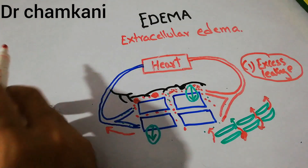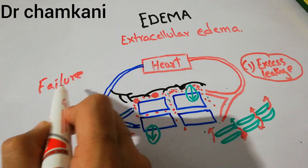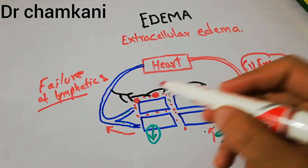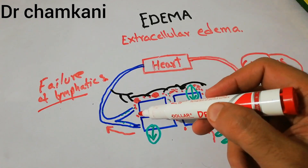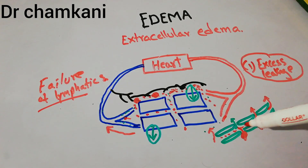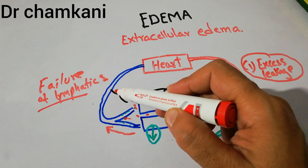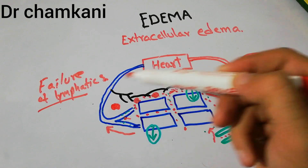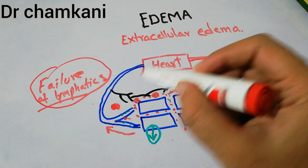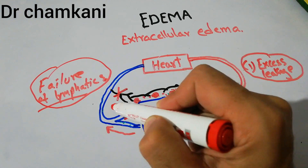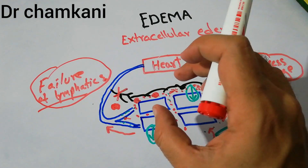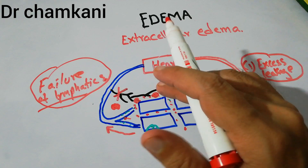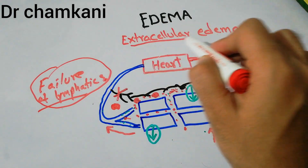The second cause is failure of lymphatics. As discussed, large particles of fats or proteins cannot enter the capillaries, so special lymphatic vessels carry them away. If there is failure or blockage of the lymphatic vessels and they are unable to transport these large particles, there will be accumulation of these particles and excess fluid outside the cells, again leading to extracellular edema.